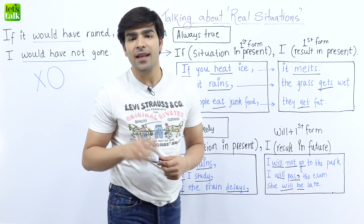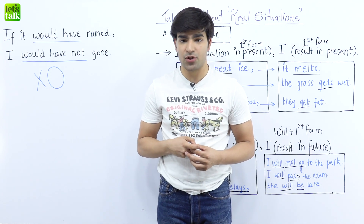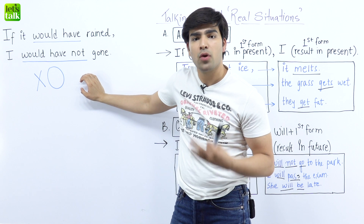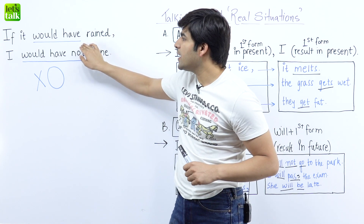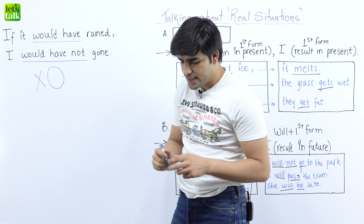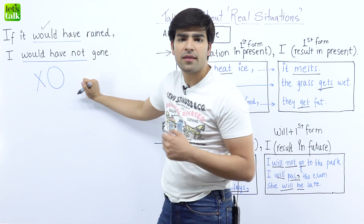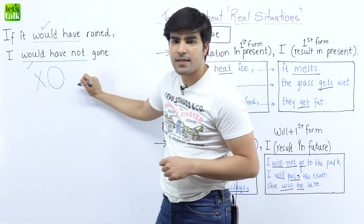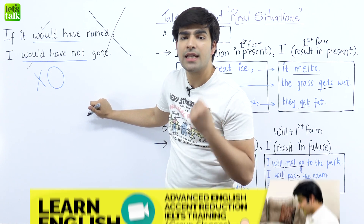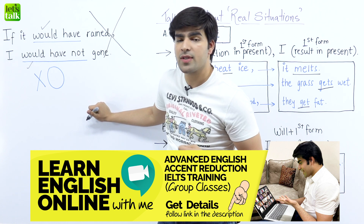This was all about real life situations in English. But here is something very interesting — a common mistake I've seen. People often say: 'If it would have rained, I would have not gone.' They use 'would have' in both parts of the sentence. That is absolutely wrong. That is not how we speak about real life situations in English.